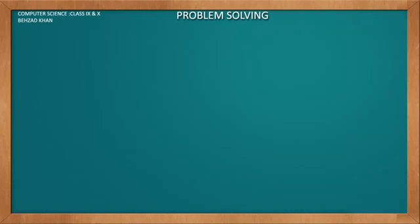So now, what happens in Flow Charts? We have a program where we start from, then we declare something, then we print something, then we represent all these things.